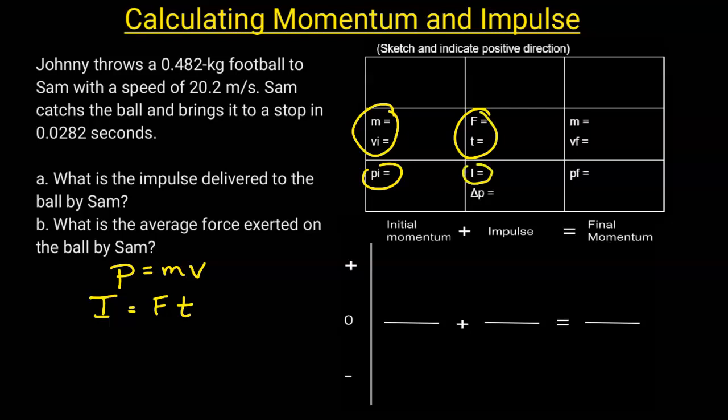Also, the impulse-momentum theorem tells us that the impulse is equal to the change in momentum. So if you exert an impulse on an object, you will change that object's momentum. Impulse and delta P are going to have the same number.